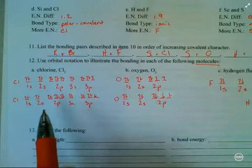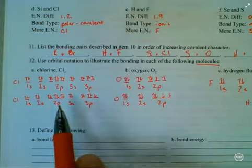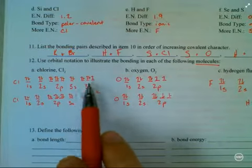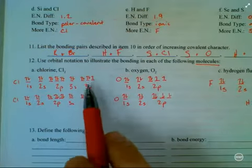Now, within the Cl atoms, we know that chlorine is a halogen. So, its highest occupied sublevel is going to have seven valence electrons.